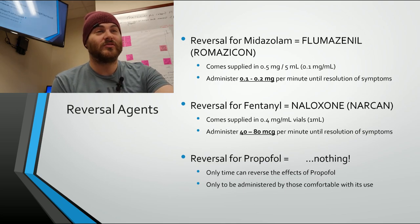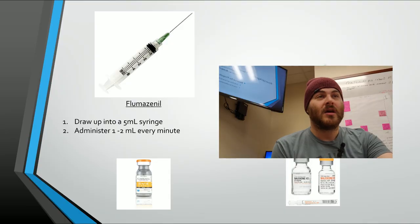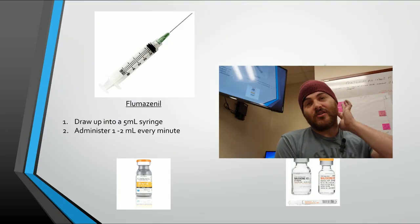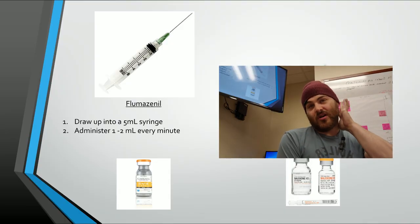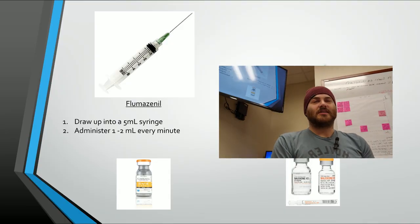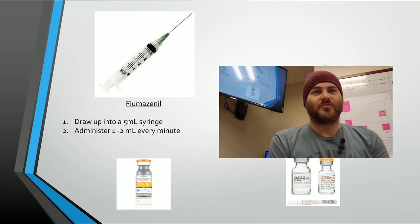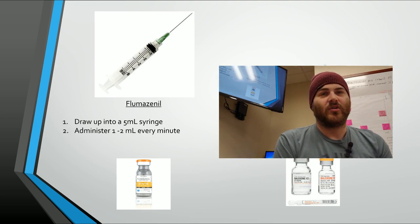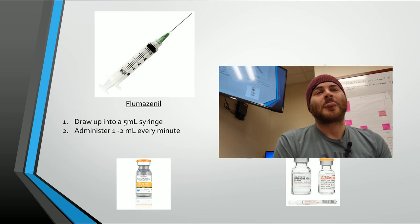That's really the offset of propofol — it's just time. Only use this drug if you're comfortable with that. Drawing up flumazenil is simple: just draw it up in a syringe and give it one cc at a time.